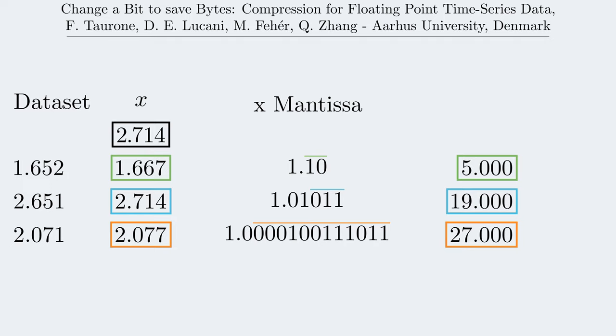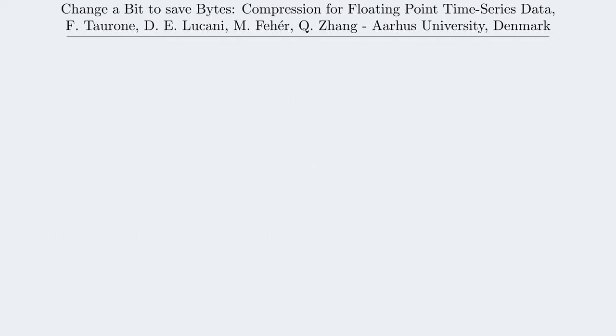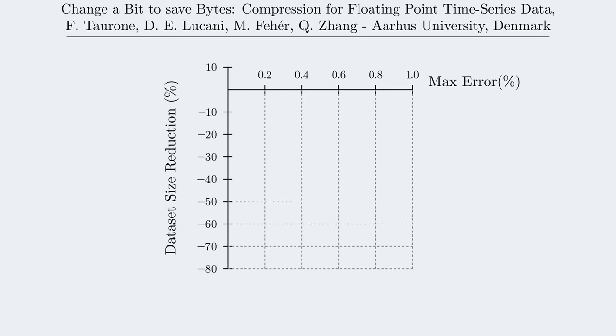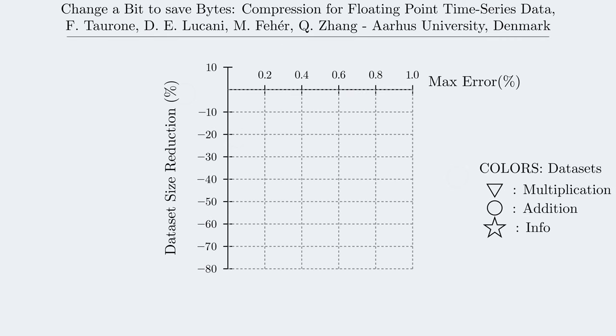To conclude, if we look at how much the addition and multiplication transforms can improve compression, considering some datasets of floating point numbers, we see that we can reduce the size of the compressed dataset up to minus 80% with consistently improved performances compared to other preprocessing methods. Thank you for watching.